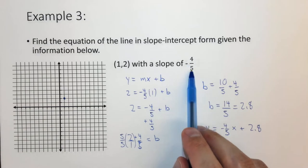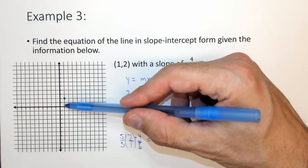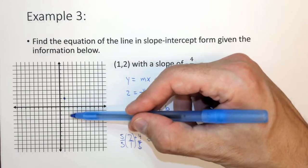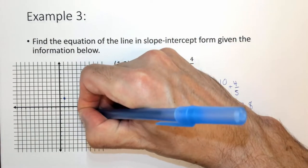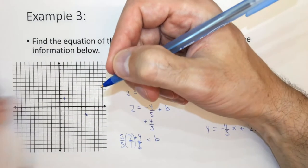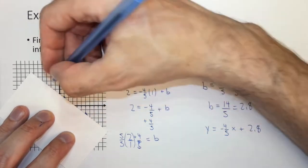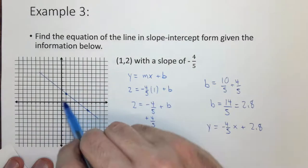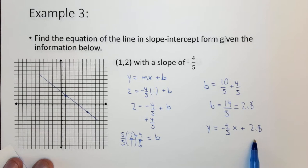Now we need to use a slope of negative 4 fifths. So we want to go down 1, 2, 3, 4, and over 5. 1, 2, 3, 4, 5. This is another point on the line. When we draw this line, it's not perfect, because it looks like it goes through exactly 3. The y-intercept is actually 2.8.